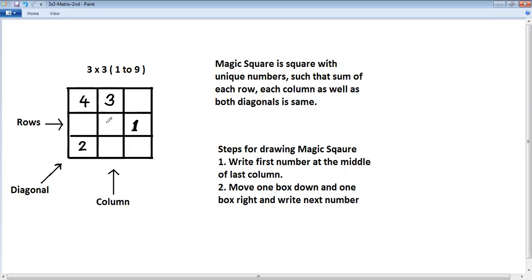Continue down, right, 5 will come here. Down, right, 6 will come here. Third rule is different to last box. When you fill last, next number should be left of it.